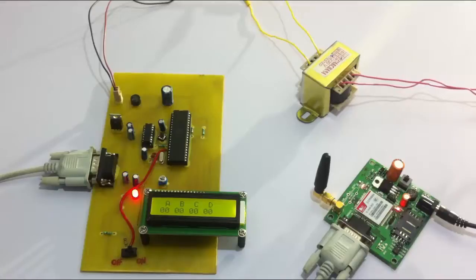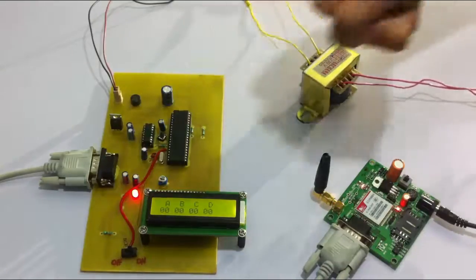Hi, this is a demonstration of the SMS based voting system project. As you can see, we first use a step down transformer for the power supply, then this is the main circuit here.